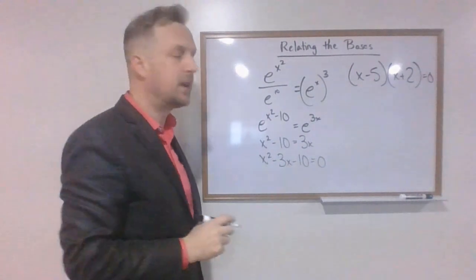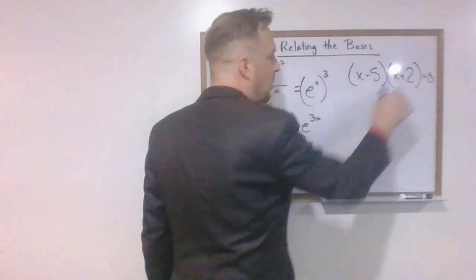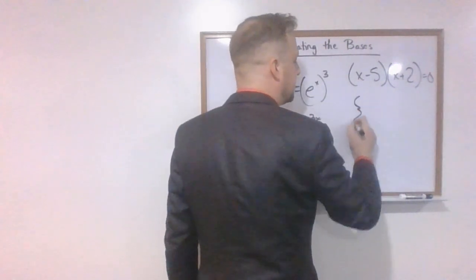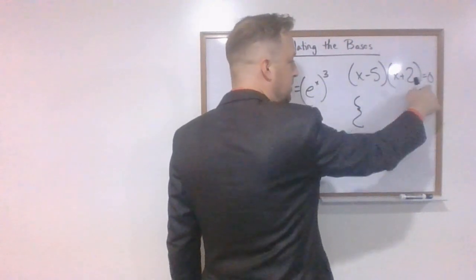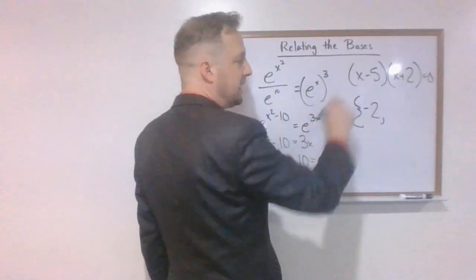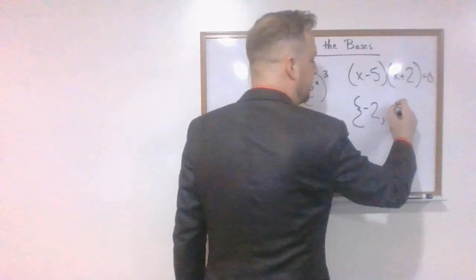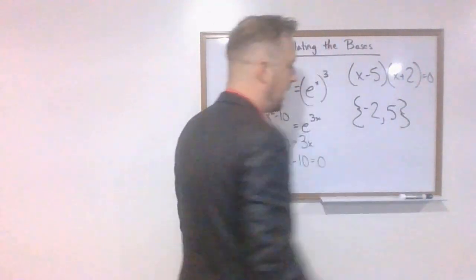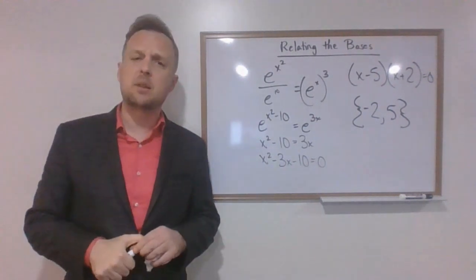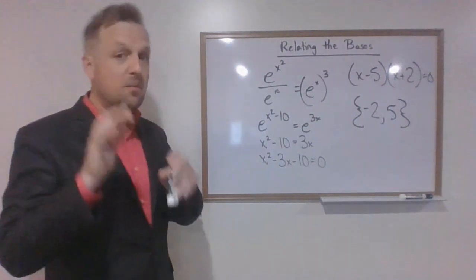Equals zero. And then we just set each one of these equal to zero. So hopefully this makes sense to everybody. x plus 2 equals zero, we subtract 2, so the first possible value is negative 2. x minus 5 equals zero, we add 5, and that gives us 5. So that's our solution set, guys.